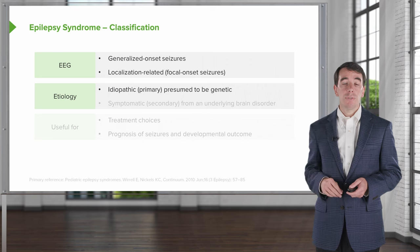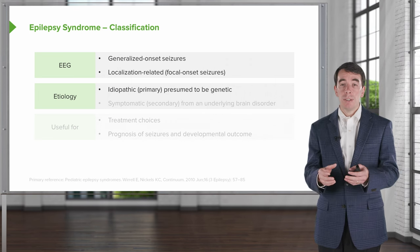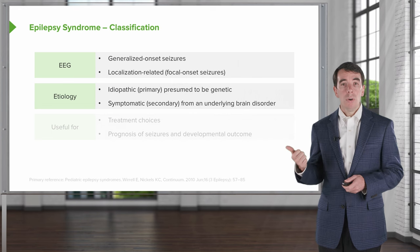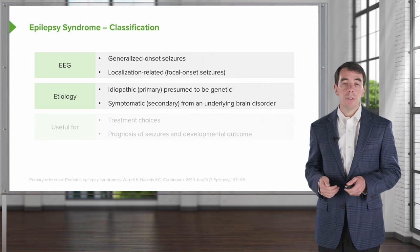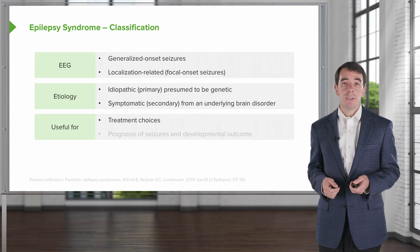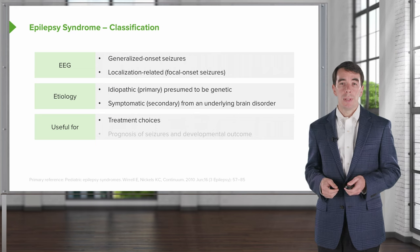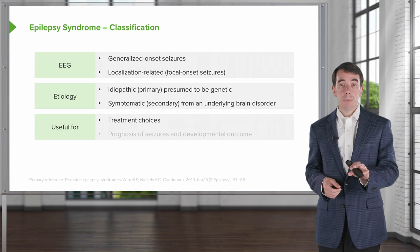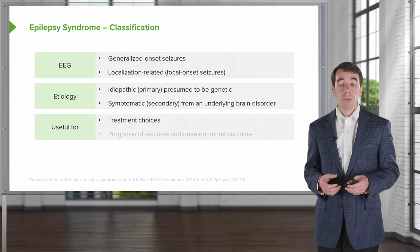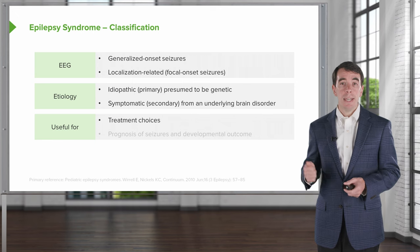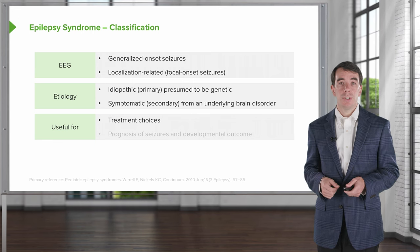The second is etiology. Is this an idiopathic epilepsy with no identifiable cause, or is this a symptomatic or secondary form of epilepsy that comes from some other underlying insult? Categorizing epilepsies in this way is extremely helpful. Certain anti-epileptics are better for generalized seizures and others for focal seizures, so there are clear treatment implications to making a diagnosis based on EEG findings.